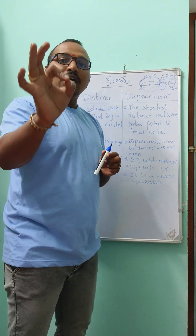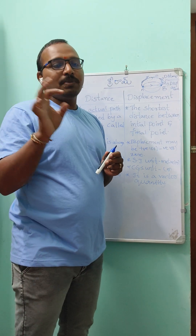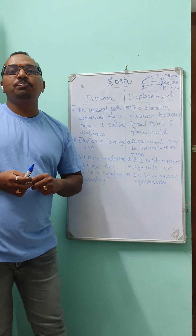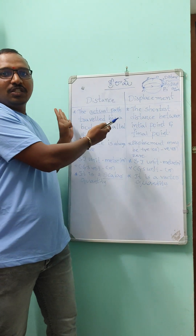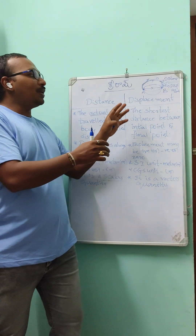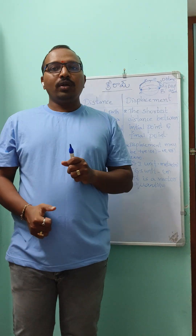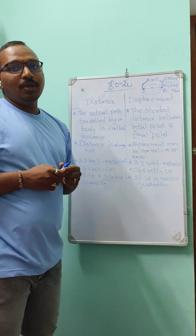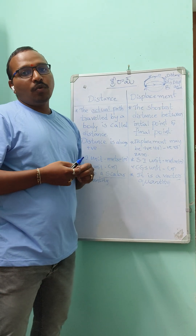What is displacement? Among these n number of paths, there will be one shortest path. The shortest distance between the initial point and the final point is called the displacement. For this shortest distance, there will be a particular direction, and since it has both magnitude and direction, displacement is a vector quantity.